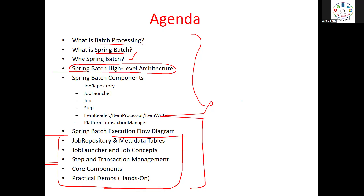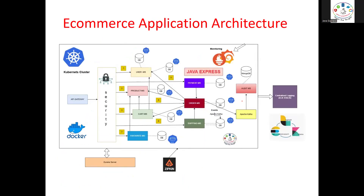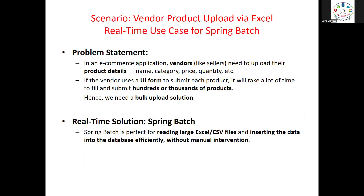In our e-commerce application architecture we have a gateway, security, and all the components. Now imagine a scenario: you are a vendor on Flipkart, Amazon, or Myntra. I have products and I want them displayed on the website. I have hundreds of products — if you want to purchase a product, my product should be visible. I have all the information ready.